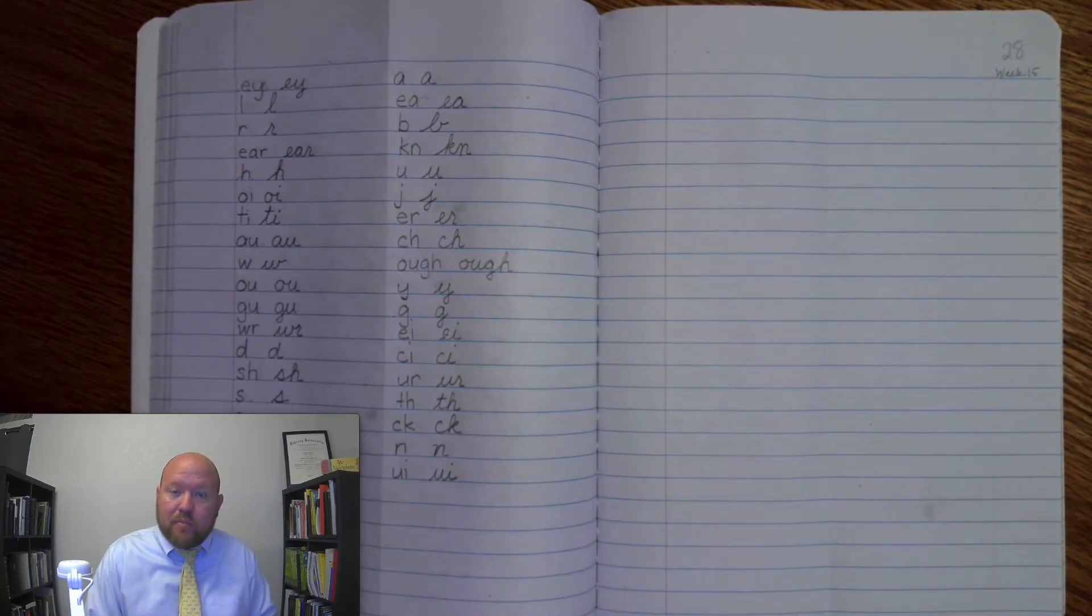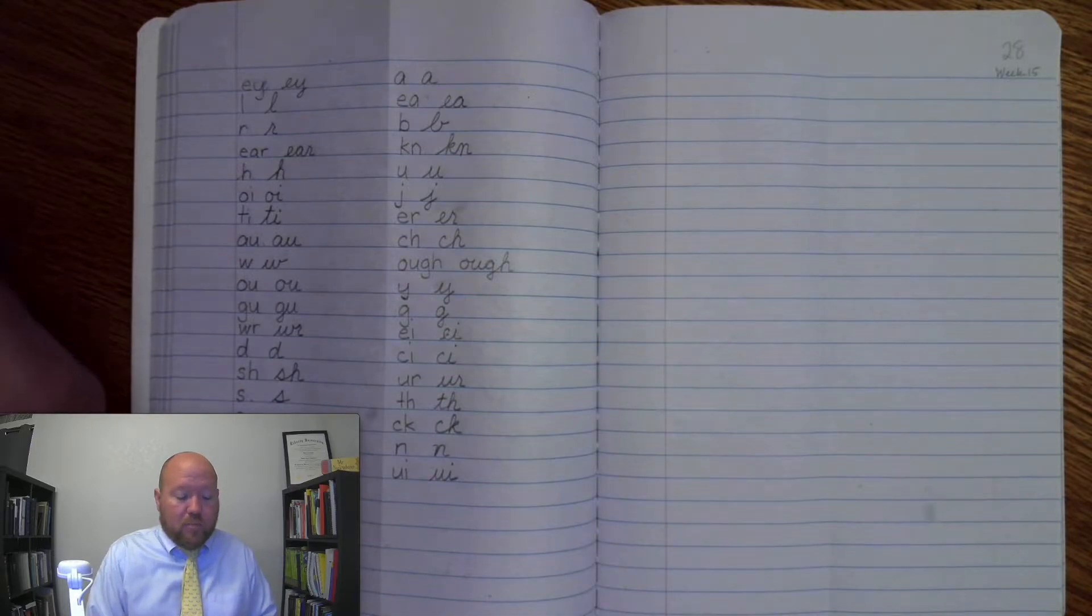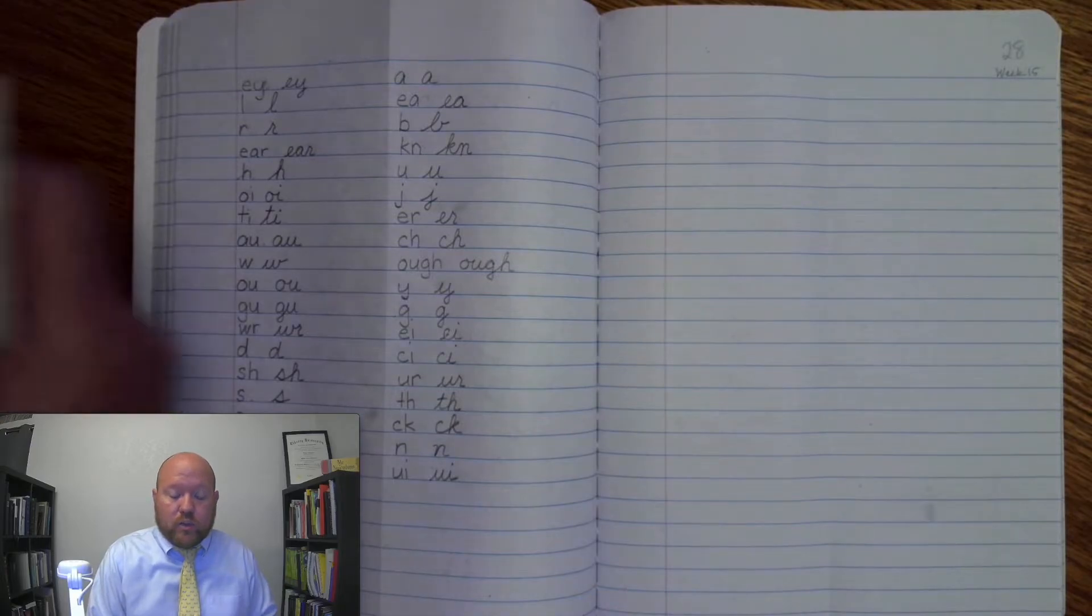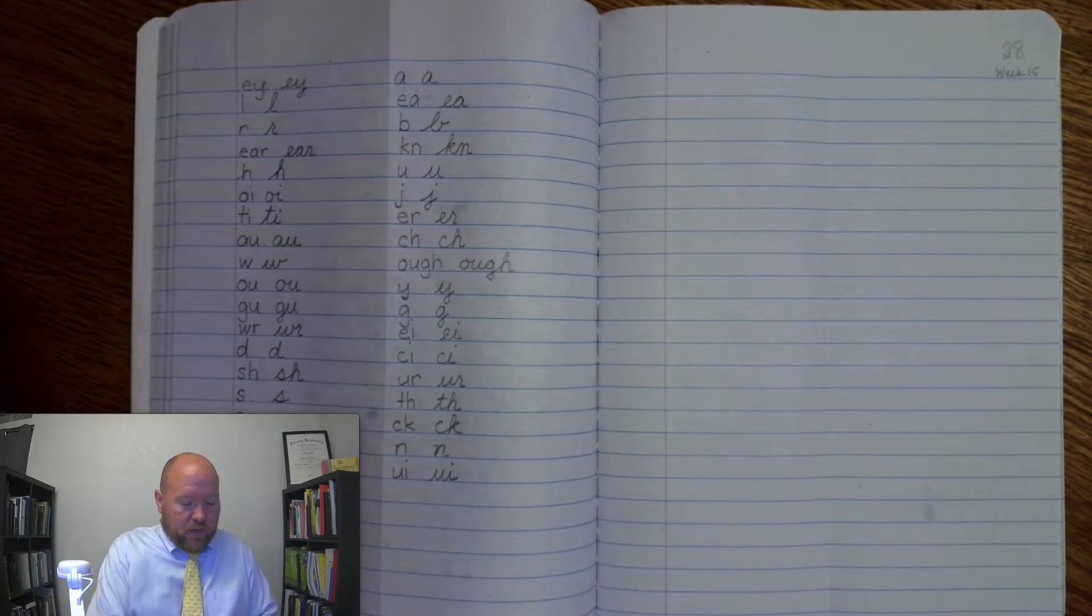All right. So, I will say the sound. You will want to repeat the sound and then write it. I will write it in manuscript for first and second, cursive for third through fifth. After you get done writing it, look up to see if you got it right. You can pause if I'm moving too quickly. If you got it wrong, put a line through it and write it correctly so you know which ones you need to spend extra time studying.